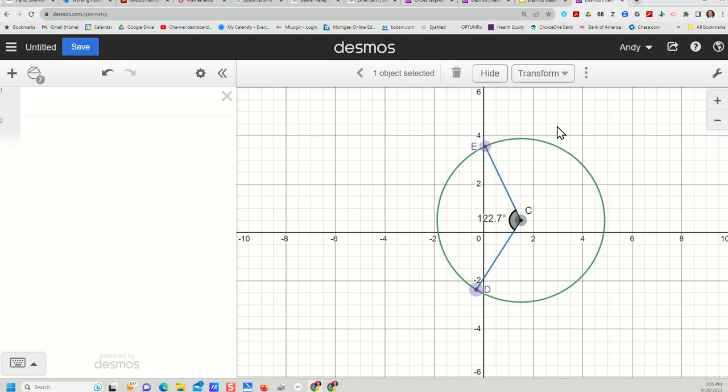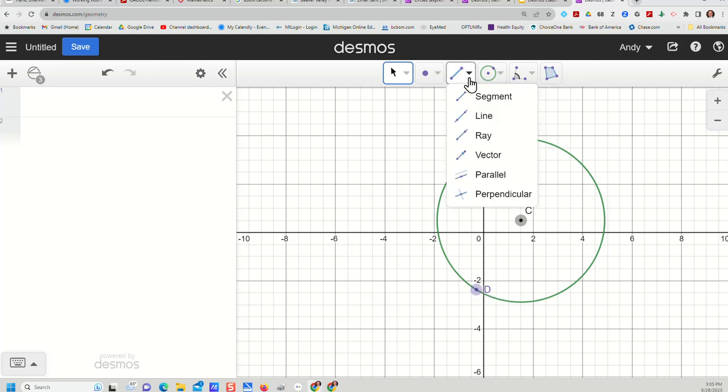And we can also create what are called directed angles. So let me select this segment and I'll delete that segment. I'll delete this angle and I'll delete this segment. So now I'm just at point C in the center, point D on the outside, and I'm going to create some more segments here.